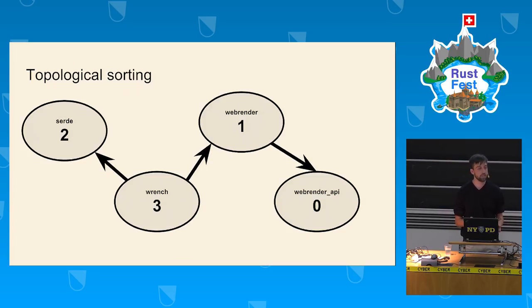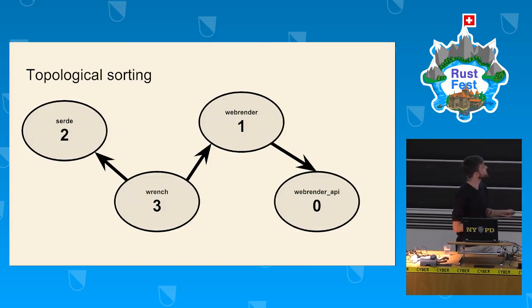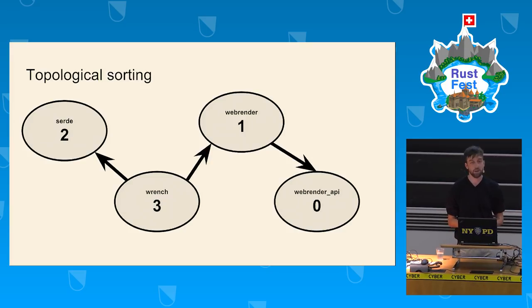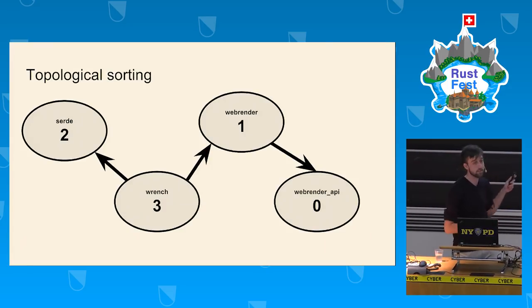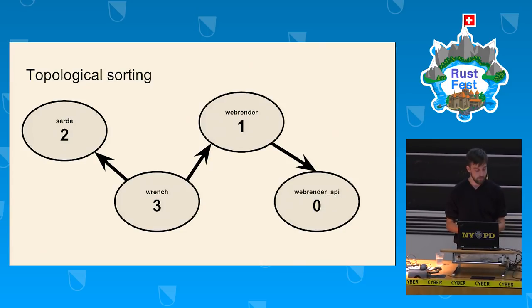Topological sorting, from a build system point of view, is simply the linear order of the graph — the order in which packages can be compiled such that at no point are we compiling a package whose dependencies haven't been built first. In this example, we pick WebRender API first since it depends on nothing else, then WebRender, and then Wrench. There is often more than one valid ordering for a given graph.